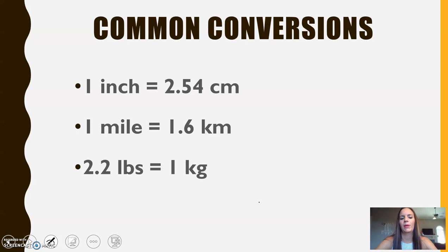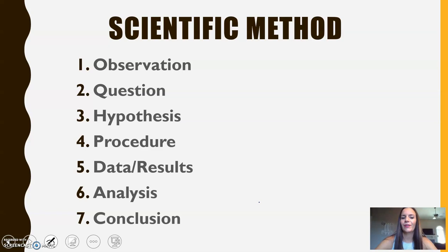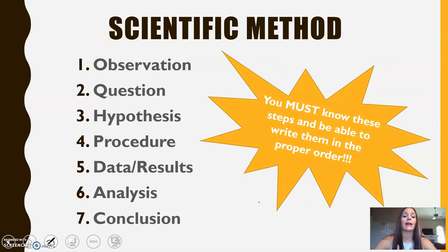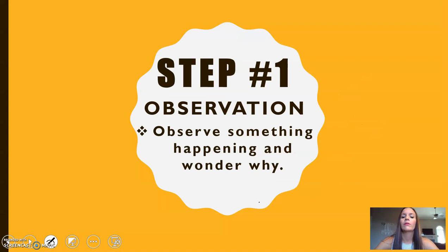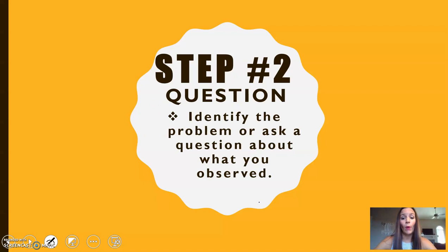Now on to the scientific method. You must know these steps in order and know what's happening at each step. Step one is observation — you observe something happening and wonder why. Step two is the question, where you identify your problem and ask a question. For example, if I have an indoor and an outdoor plant that are exactly the same and the indoor plant isn't growing as much, my question might be: does natural versus artificial light affect plant growth?